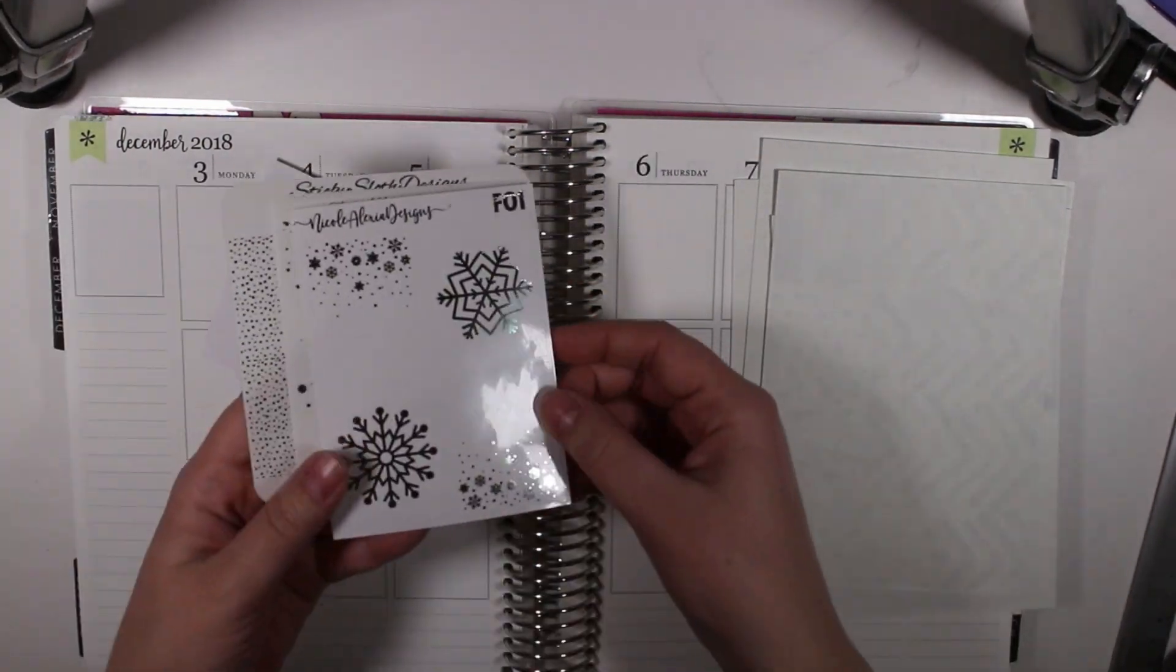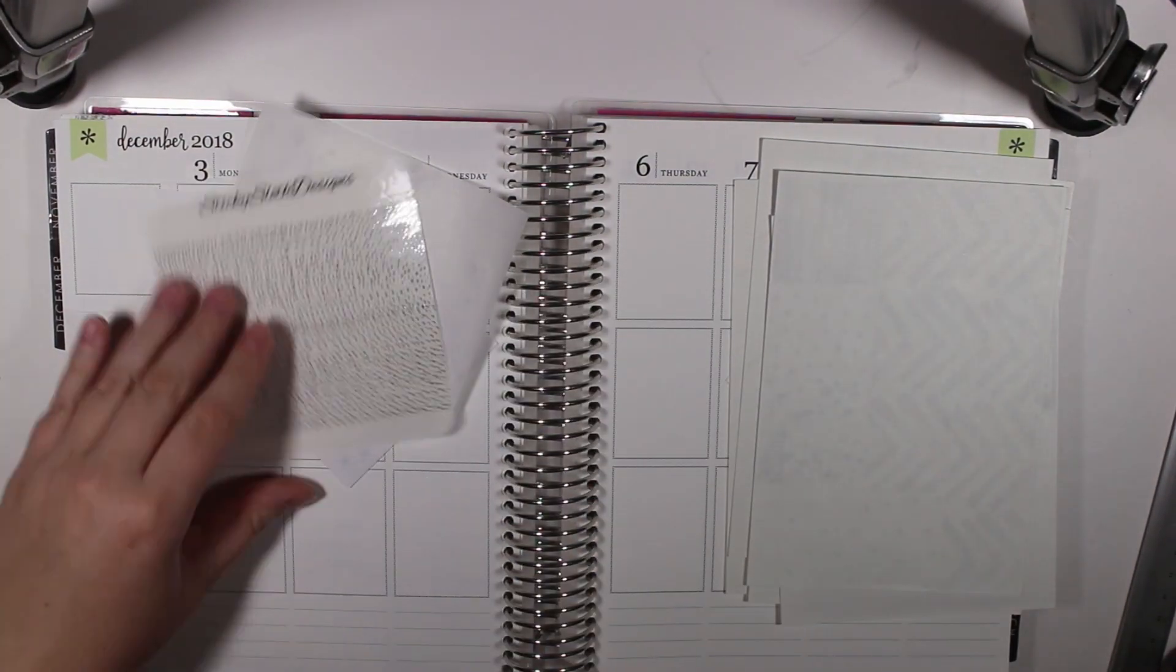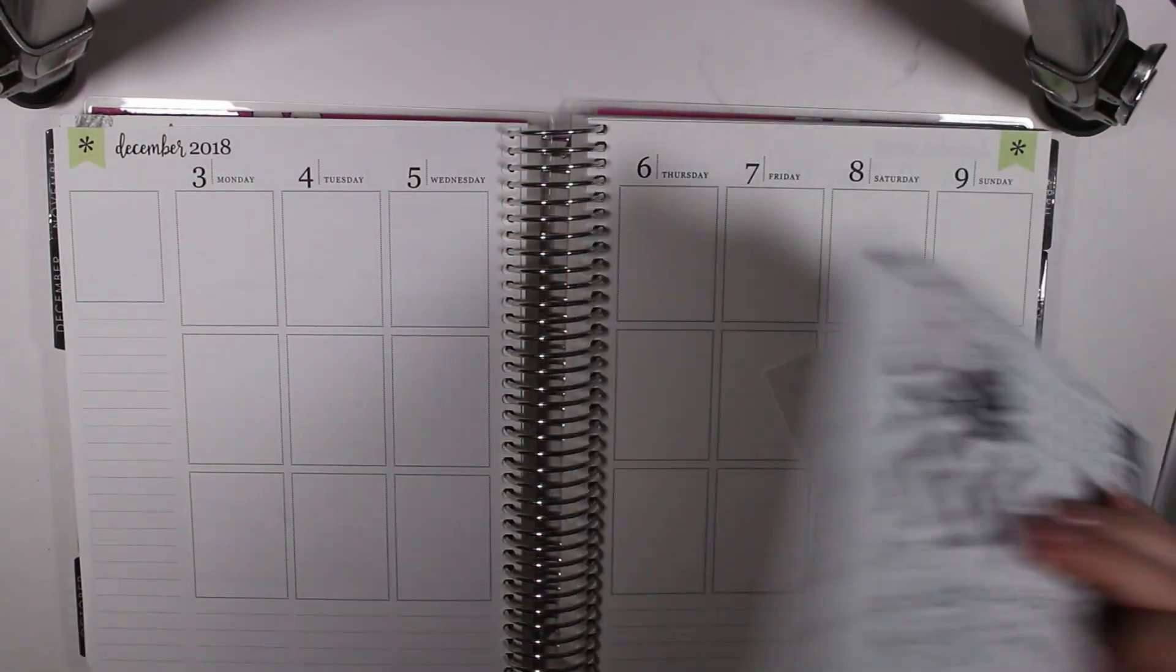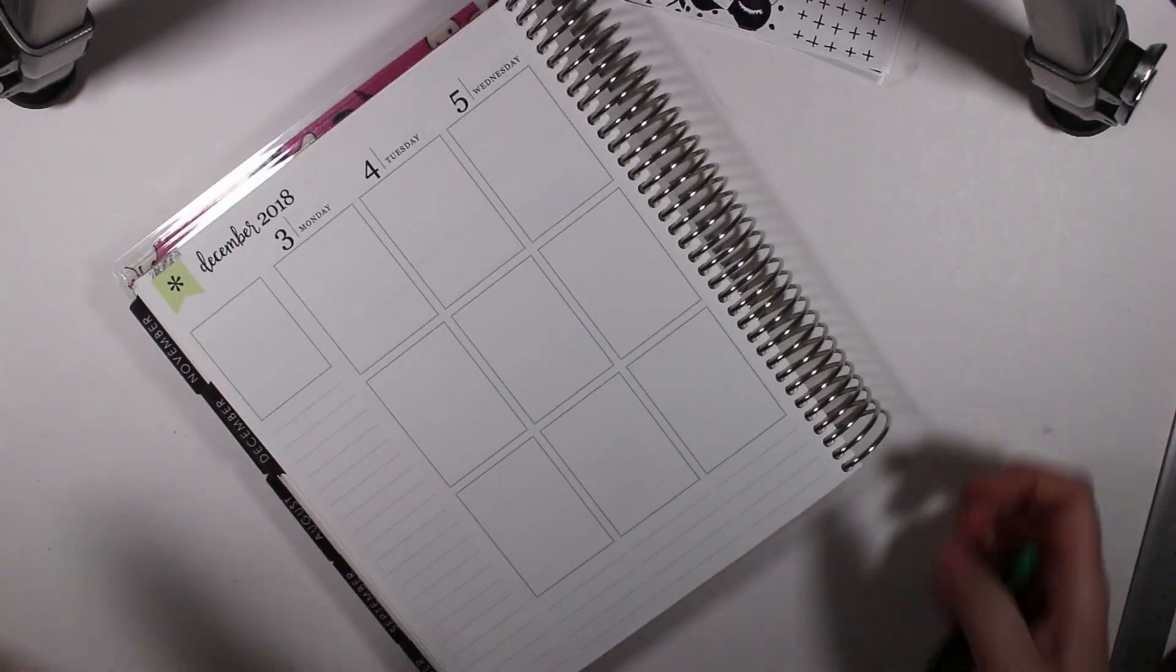I am using the Case of the Mondays kit from Glam Planner along with some silver foiled items from Nicole Alexia Designs, Scribble Prints Co., and Sticky Sloth Designs. And then I also pulled in some glitter headers from Mandy Dreams.